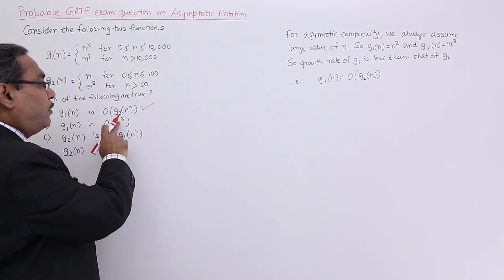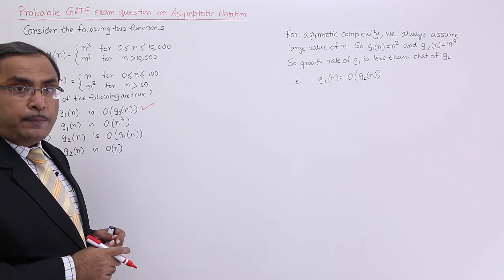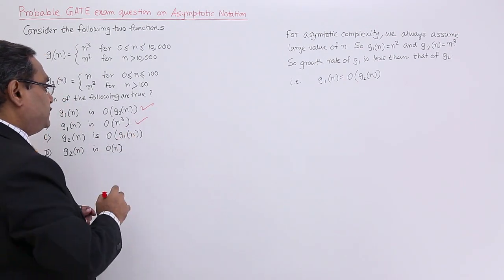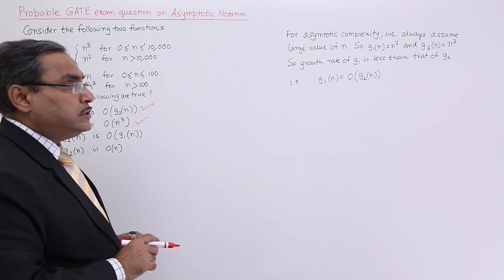And see, g1(n) is equal to n². So, g1(n) is big O of n³ also, that is giving me the upper bound. I shall also go for this particular option, and other two options are not okay.